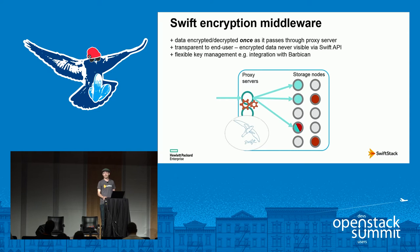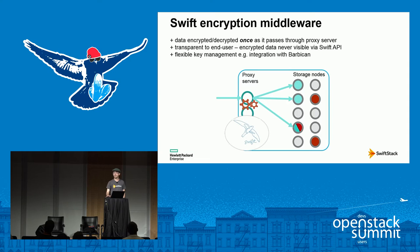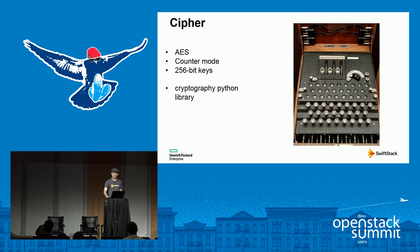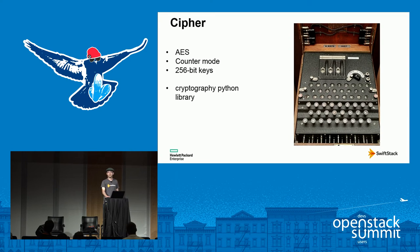Considering Swift's architecture, the natural point to do encryption is in the proxy server. There, we can encrypt all data on ingest before it's ever distributed to the object nodes, and by decrypting data on the way back out, this can all be transparent to the end user. Keep in mind, this is an operator feature. This also provides a natural point at which to integrate with external key management services such as Barbican, similar to how we already integrate with Keystone.